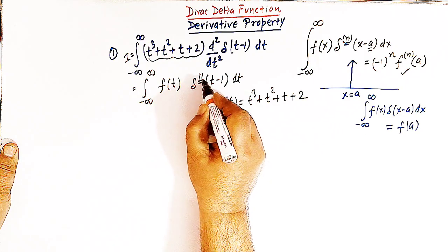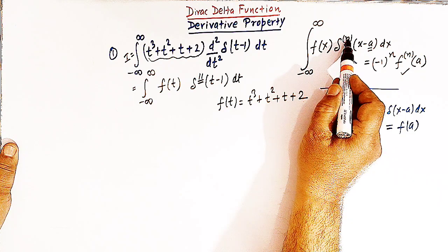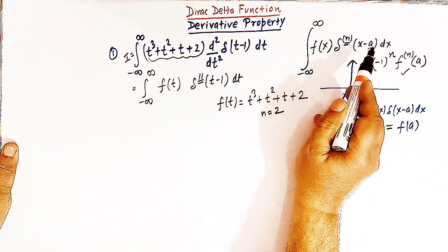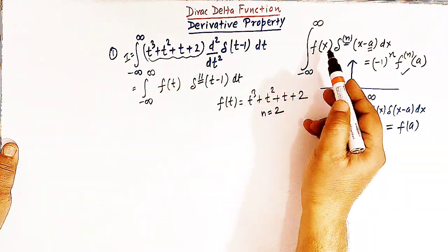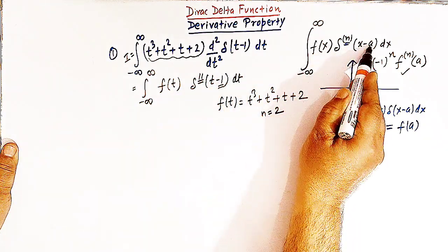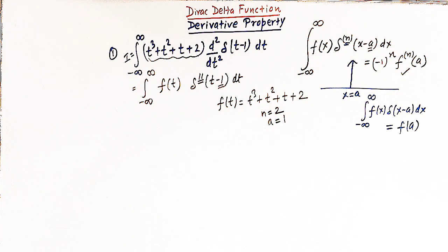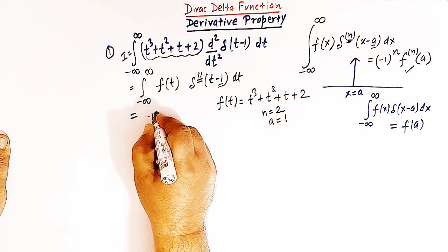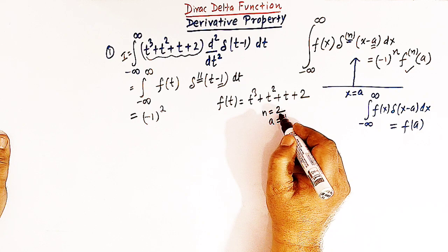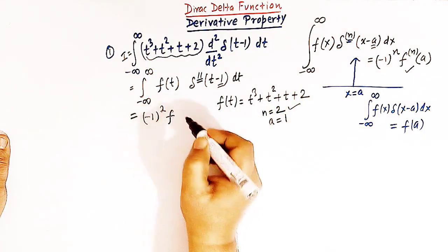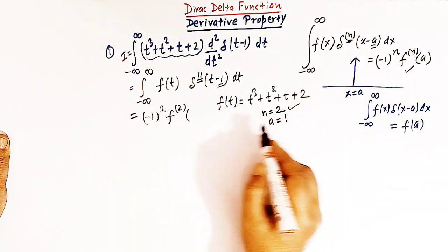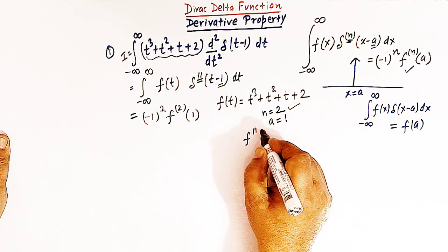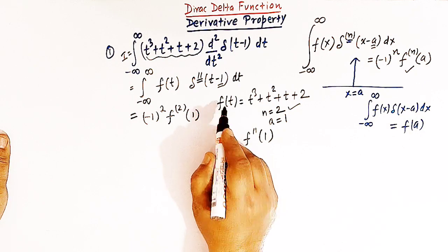Our function f(t) is given by t³ + t² + t + 2. The second derivative of the delta function is involved, so n equals 2. It is important to note that here the variable is t rather than x, but the variable does not make any difference. The value of a is given by 1. So the value of this integral, due to the derivative property, is given by minus 1 raised to 2 times the second derivative of f evaluated at a equals 1, which can be written as f''(1).